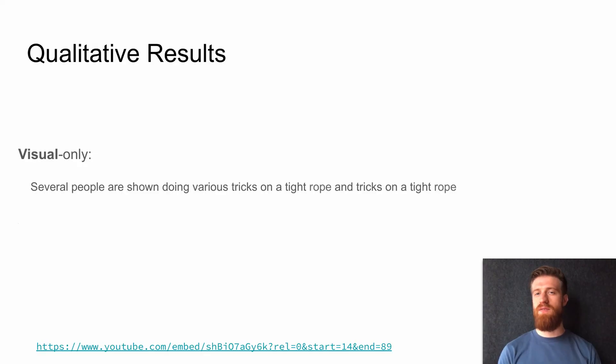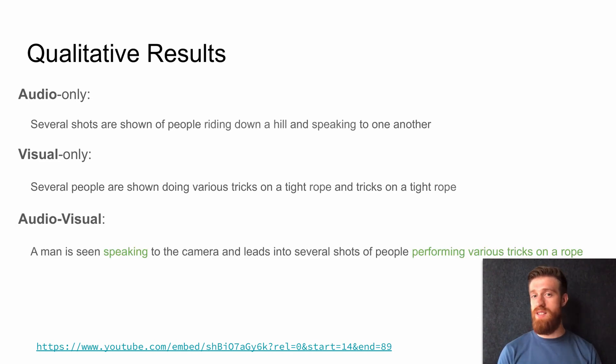We see that the visual-only model managed to grasp that there are several people and that they are doing various tricks on the rope. But not the fact that the person in front was speaking. At the same time, the audio-only model misses all visual details but grasps the speaking part. However, the model which utilizes them both could correctly caption the event using the details from audio and visual tracks.